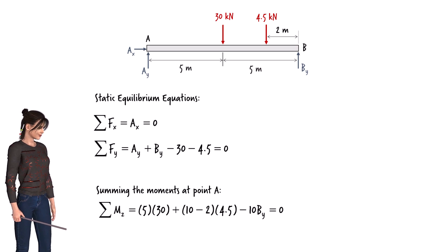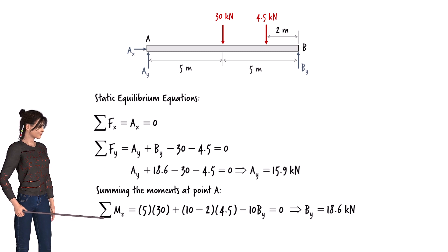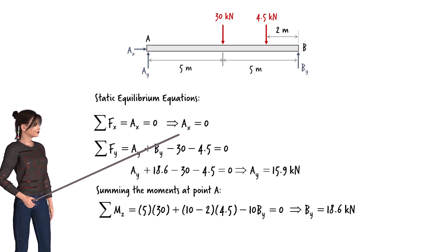We can use the moment equation to determine By, and use the second equilibrium equation to determine Ay. For this beam, Ax equals 0.